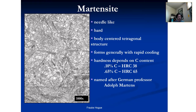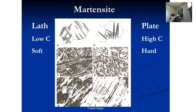Here's what martensite looks like — this actually has a lot of texture in the image. We see the effect of the etchant eating away the metal a little bit. This is a classical representation: lath martensite forms with lower carbon content, so it's a bit softer, while plate martensite forms with higher carbon content, so it's harder. So lath and plate — don't want to forget those distinctions.